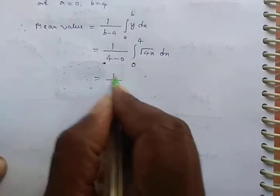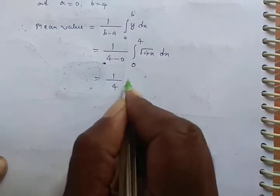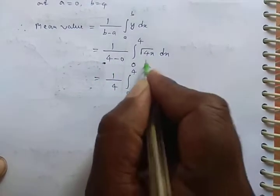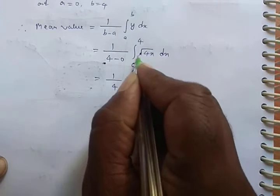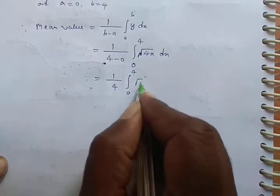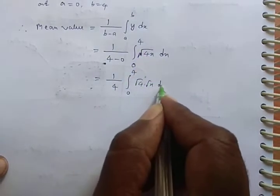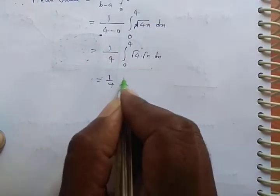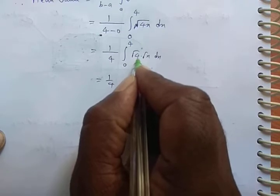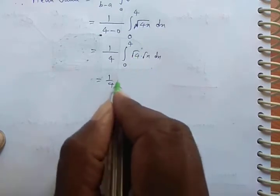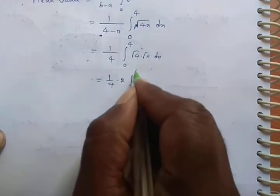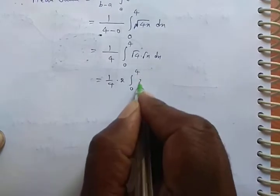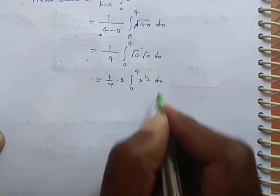Which is equal to 1/4, integration 0 to 4. We can write this as √4 × √x dx. Which is equal to 1/4, so √4 means 2. That 2 I am writing outside. 2 times integration 0 to 4.